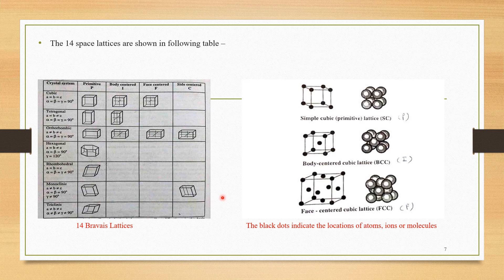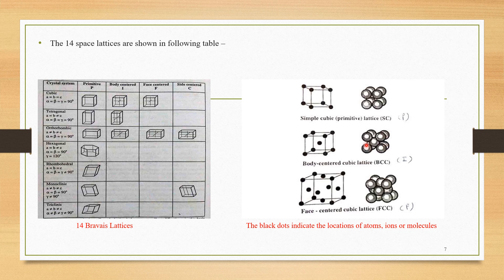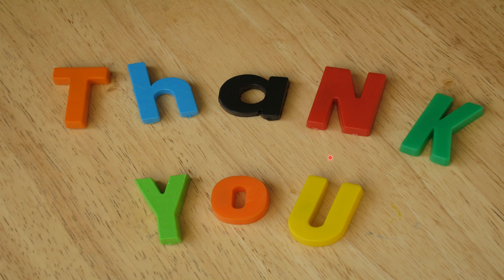In this lecture, we focused on the different crystal systems, crystal properties, and the 14 Bravais lattices — what they are and their types for different fundamental crystal systems. The remaining points from this chapter will be studied in the next lecture. If you like this video, please subscribe to the channel and press the bell icon to get notifications for upcoming lectures. Thank you.